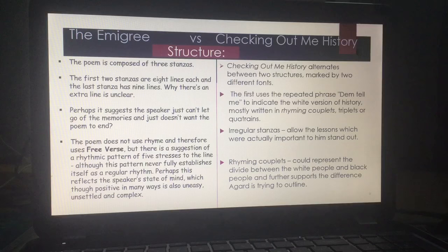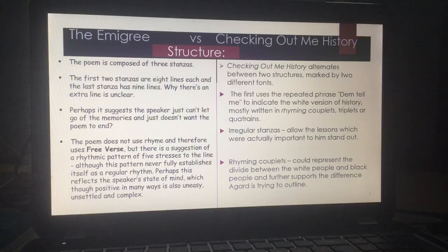In terms of structural devices, The Emigrée is three stanzas. The first two stanzas are eight lines, and the last has nine. So there's an extra line, and this perhaps suggests that the speaker can't let go of her memories and is trying her best to hold on — there's almost a theme of desperation. The poem doesn't use rhyme and it's free verse. There's a suggestion of a rhythmic pattern of five stresses to the line, although this pattern never fully establishes itself as regular because it is inconsistent.